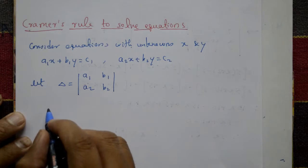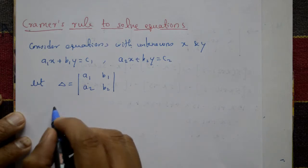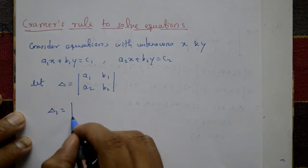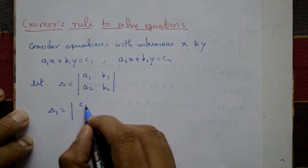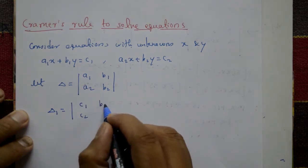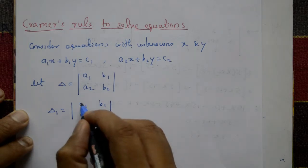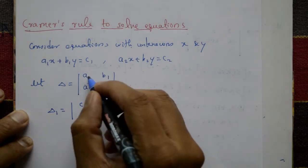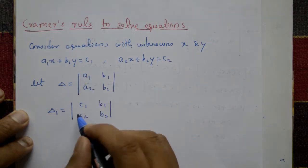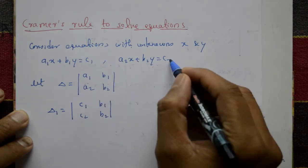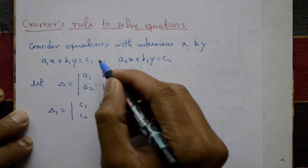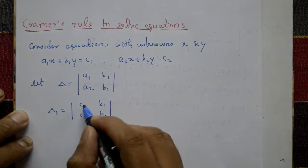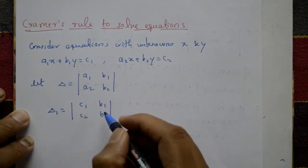Now consider delta 1. Delta 1 is formed by taking c1 and c2 — the right-hand side values — and replacing the first column (a1, a2) with c1 and c2, while keeping b1 and b2 as the second column.